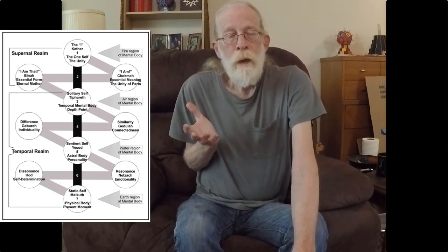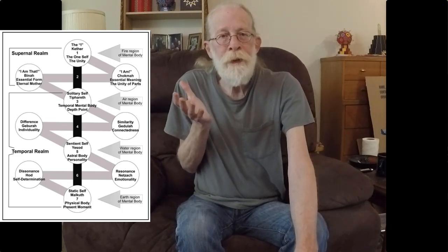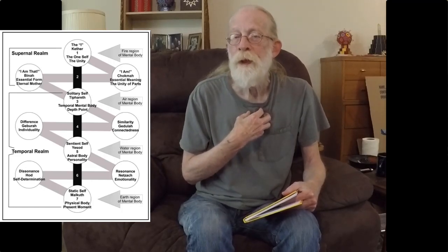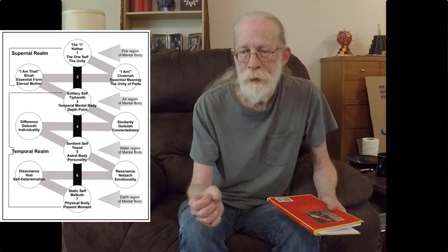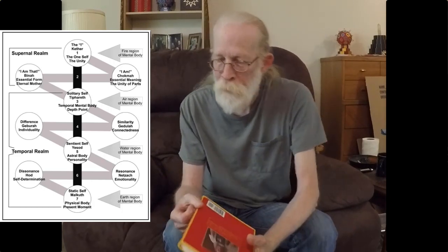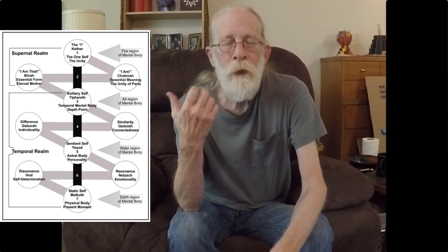The two exceptions are the first and the second stage. The first stage is the I, recognizing, experiencing, being the I. And the second station is the perception, the direct perception of essential meaning. Both of these are not really covered in initiation into hermetics, especially at step eight. The I becomes the focus in steps nine and ten.